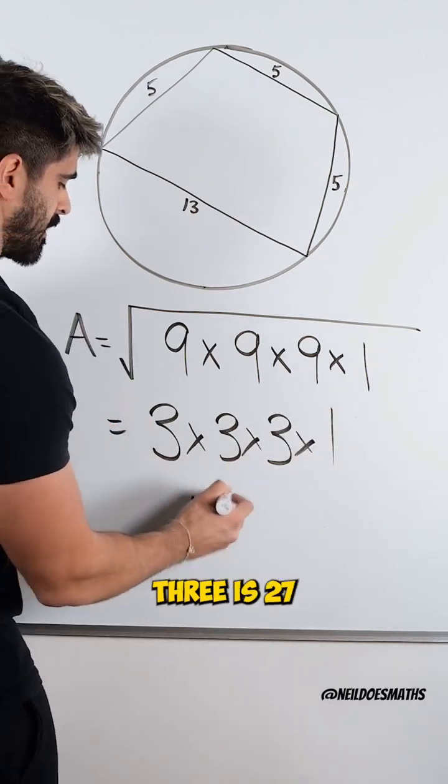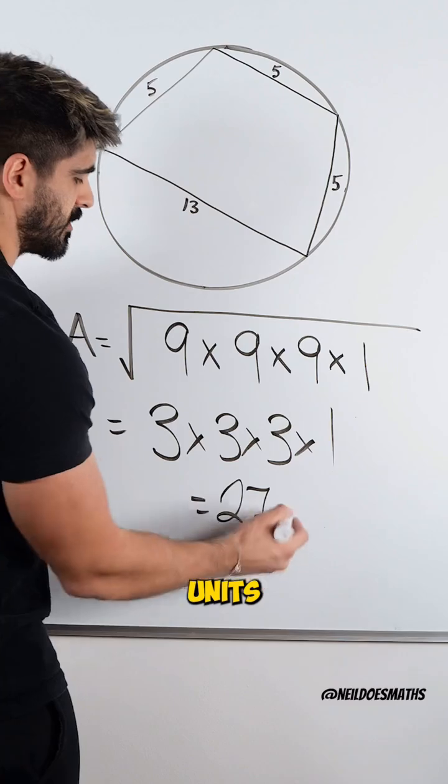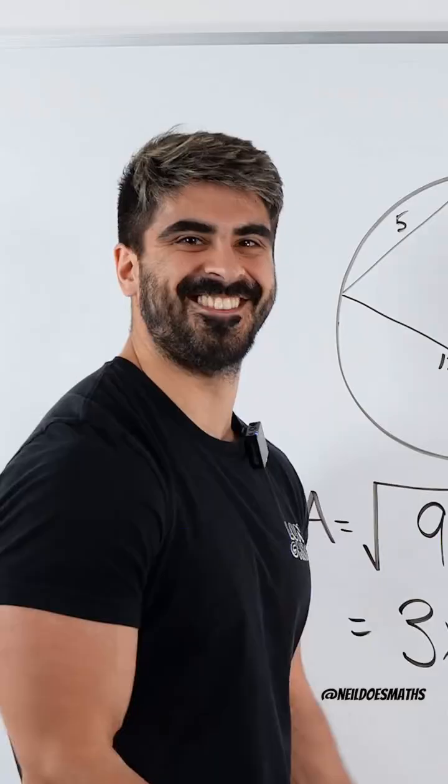3 times 3 times 3 is 27 units squared. Nice.